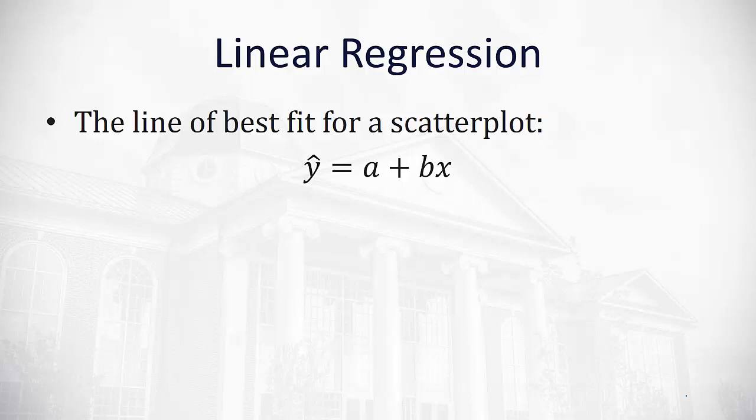Interestingly, if the slope is positive, r is also positive. If the slope is negative, r is also negative. In this way we can use the slope of b to determine if we have a positive or negative correlation.